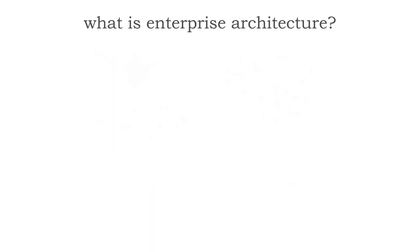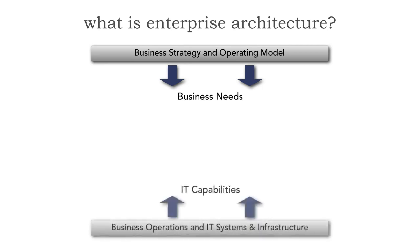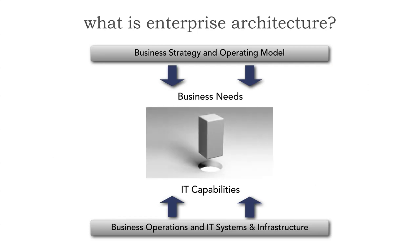When we think about what enterprise architecture is, let's take a look at how a typical business is really structured, because we have the business strategy and operating model, which produces something called business needs. Then we have operations and IT and infrastructure, where most of us are, and this produces IT capabilities. The problem in most companies is that trying to match the business needs with the IT capabilities we are producing in technology is like putting a square peg in a round hole. Very rarely do these two match up.